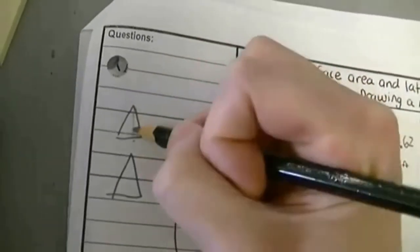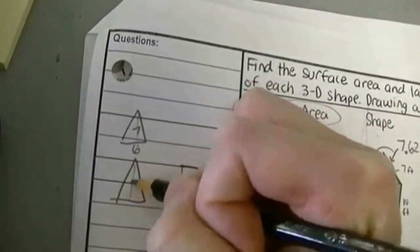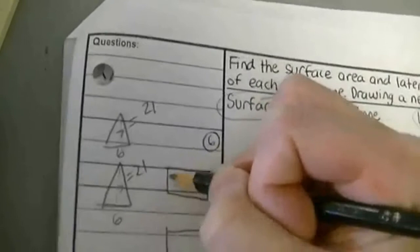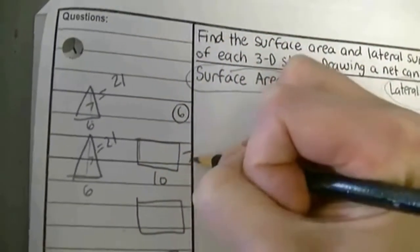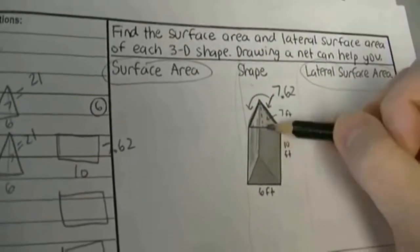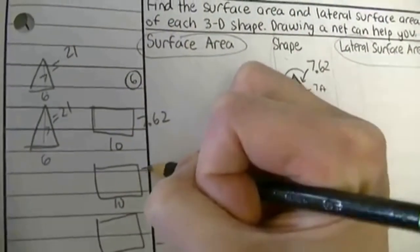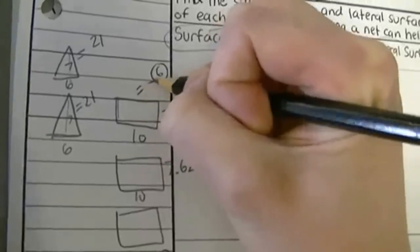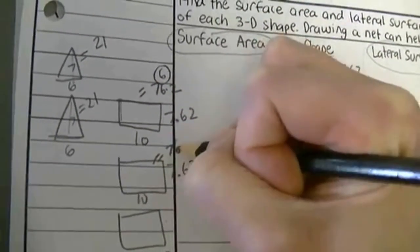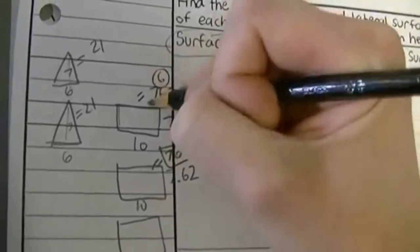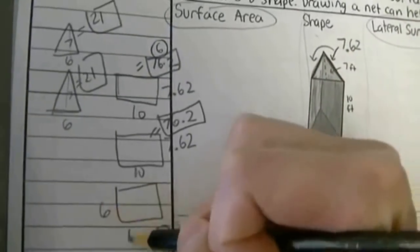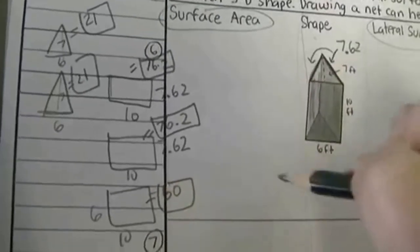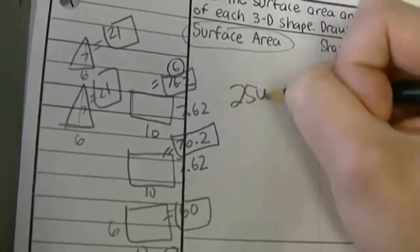From here to here is 7, and the base is 6. Height is 7, base is 6 — so this triangle area is 21. The rectangles: one is 10 by 7.62 for each slanted side, and the base is 10 by 6, which is 60. When I add everything up correctly, I should get 254.4 feet squared for the surface area.